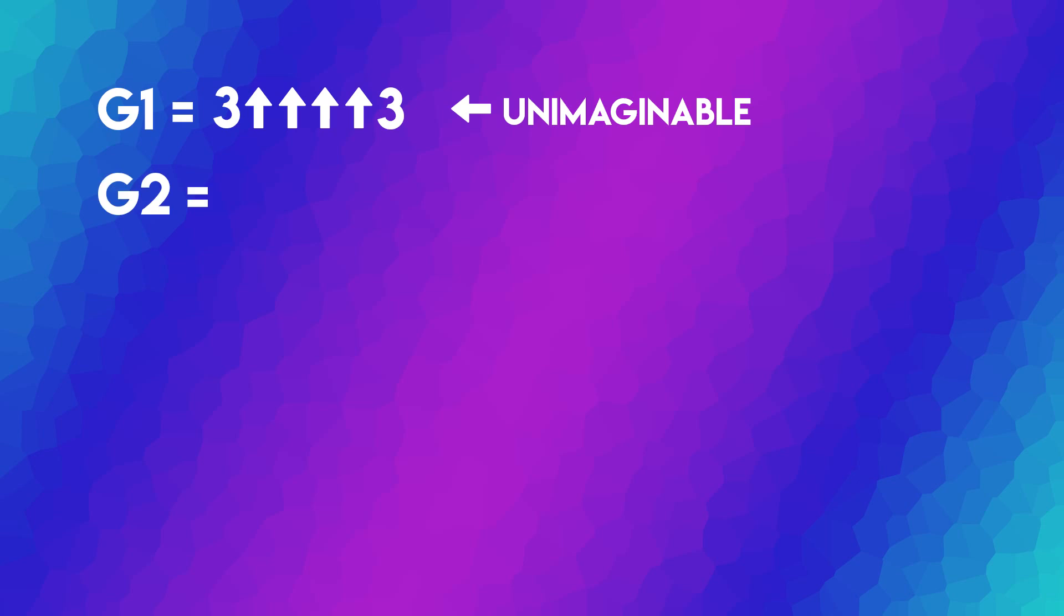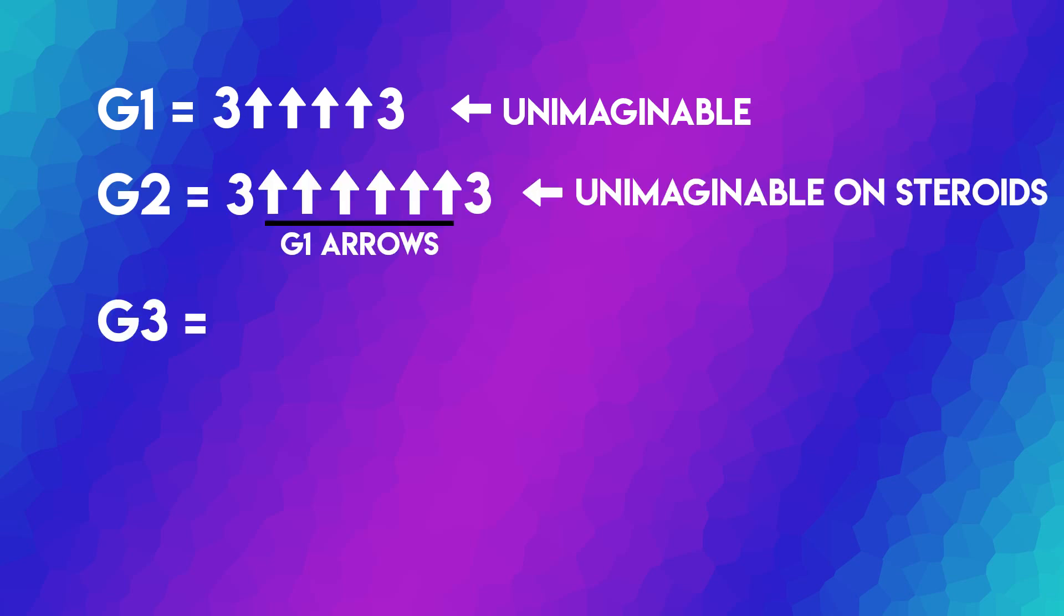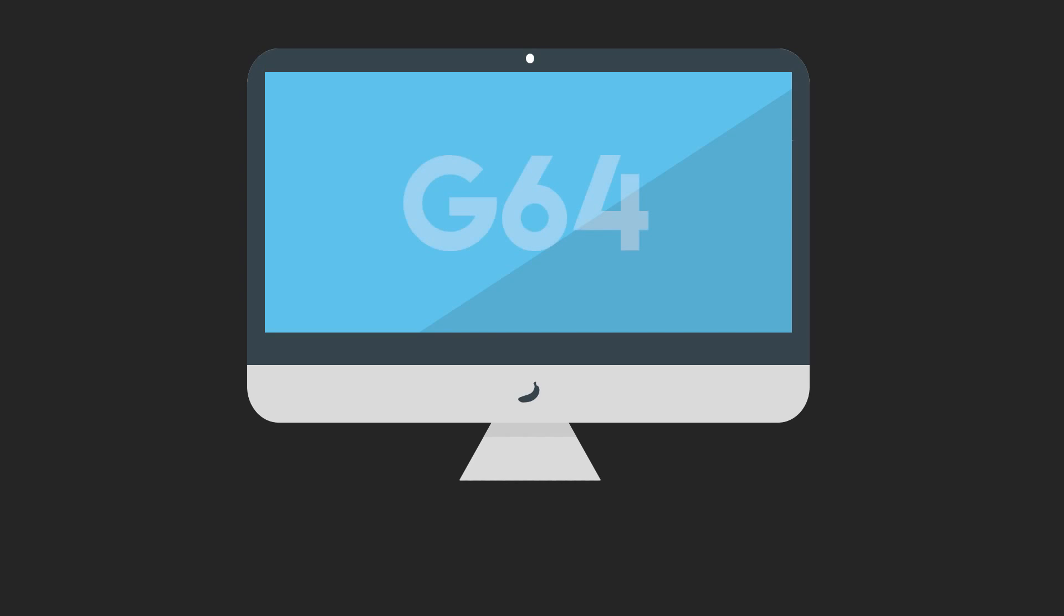Next we have G2, and this is 3 with G1 arrows. And then you have G3, which has G2 arrows, and so on and so forth, until you reach G64. So this number exponentially grows at an insane rate, all the way up until G64.